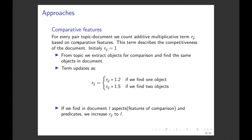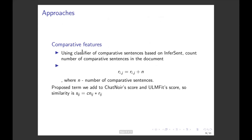If we find in the document one object, we multiply our term by 1.2. If we find two objects, we multiply our term by 1.5. And if we find in the document another comparative features, for example aspects or features of comparison and predicates like better, faster, slower, etc., we increase the R term by the number of found features.